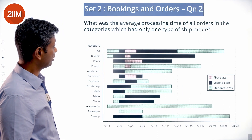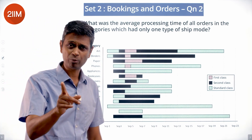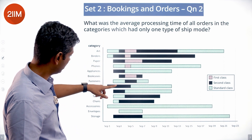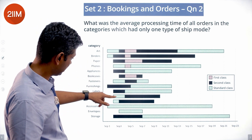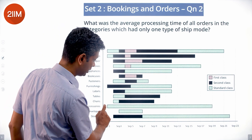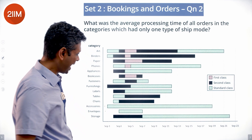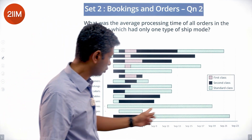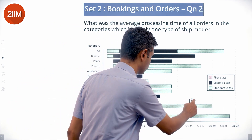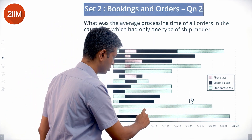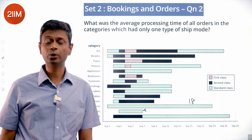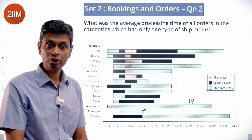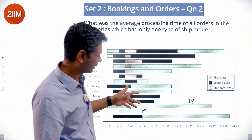Next question: what is the average processing time of all orders in the category that has only one type of ship mode? Looking through the categories — everything with multiple ship modes is eliminated. Only one category is completely standard class throughout. That category goes from September 1 to 19, which is 18 days, and has another order of 3 to 7, which is 4 days. So 18 plus 4 equals 22, divided by 2 orders, gives an average processing time of 11 days.